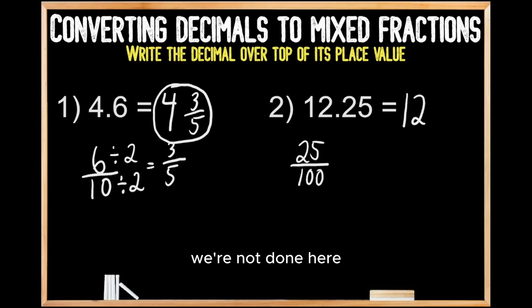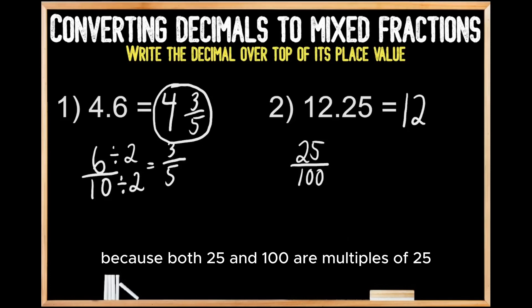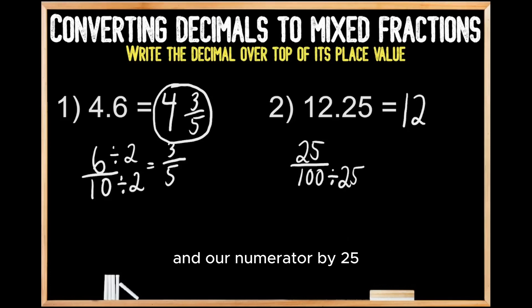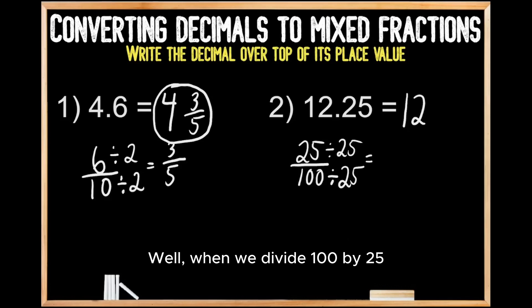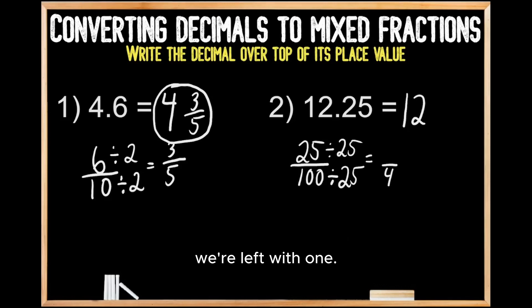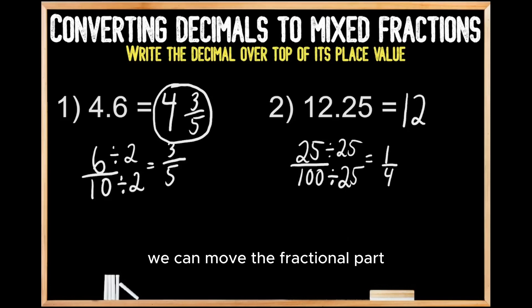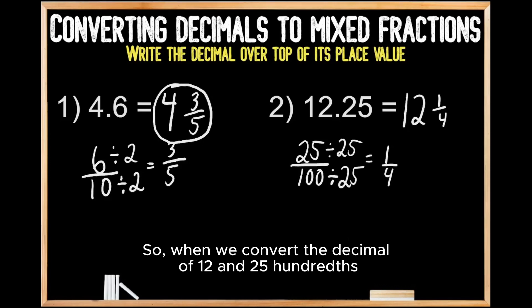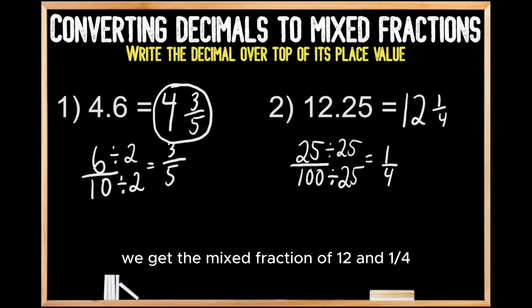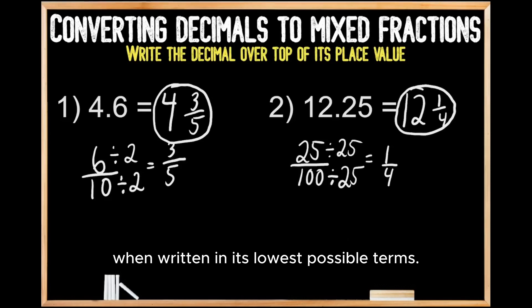Just like with the first problem, we're not done because we can simplify this fraction. Both 25 and 100 are multiples of 25, so we divide both the denominator and numerator by 25. When we divide 100 by 25, we're left with 4. When we divide 25 by 25, we're left with 1. Since there's no common factor between 1 and 4 other than 1, we're done. The fractional part is 1 fourth. So when we convert the decimal of 12 and 25 hundredths into a mixed fraction, we get 12 and 1 fourth in its lowest possible terms.